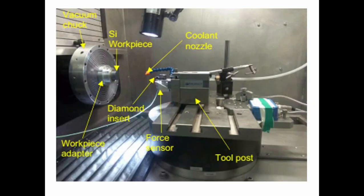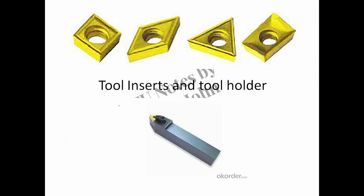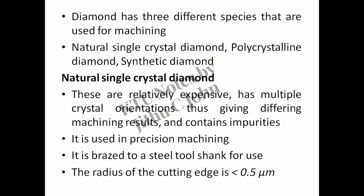This image shows the diamond micro-turning process with its important components such as vacuum chuck, workpiece adapter, force sensor, coolant nozzle, and tool post. The figure shows ultrasonically assisted single-point diamond turning of an optical mold of tungsten carbide. Diamond has three different species used for machining: natural single crystal diamond, polycrystalline diamond, and synthetic diamond. Natural single crystal diamond is relatively expensive, has multiple crystal orientations giving differing machining results, and contains impurities. It is used in precision machining and is brazed to a steel tool shank for use. The radius of the cutting edge is 0.5 µm.